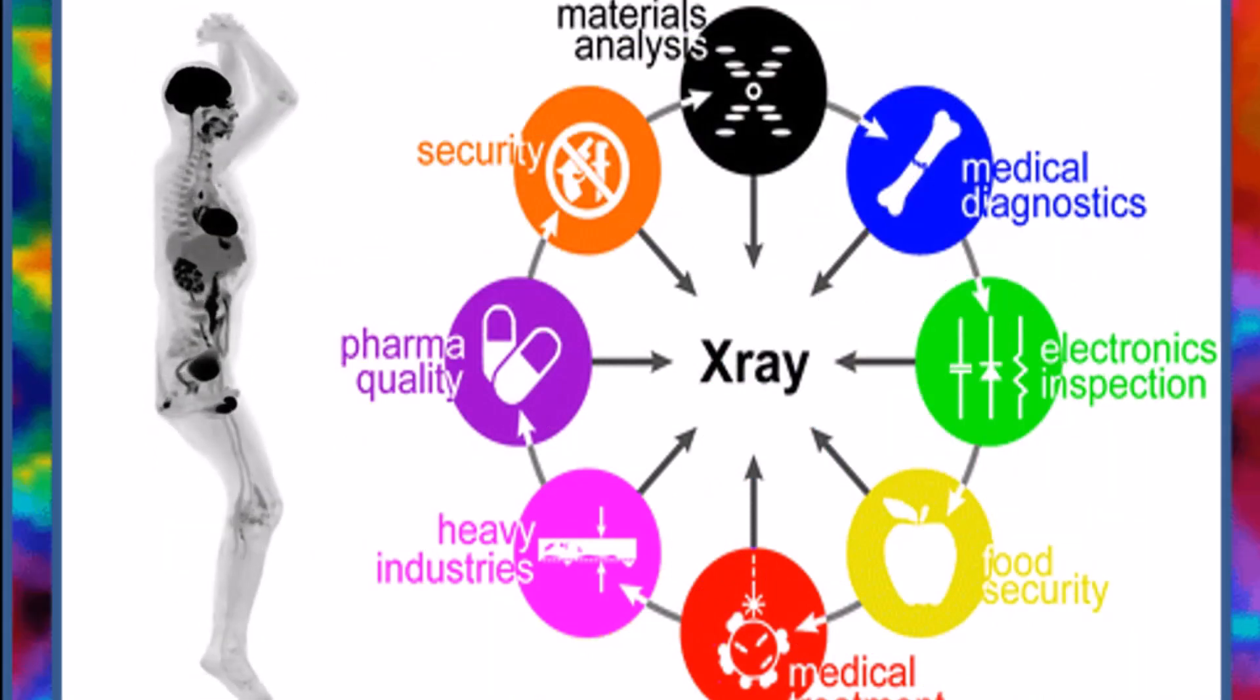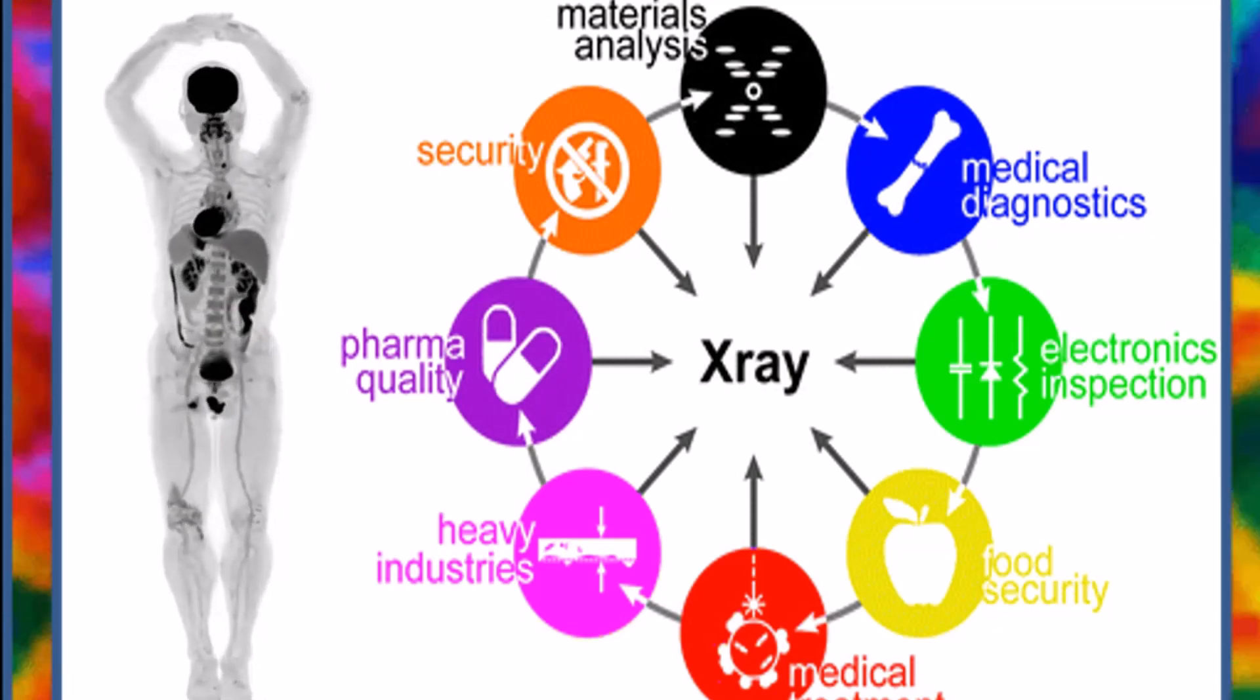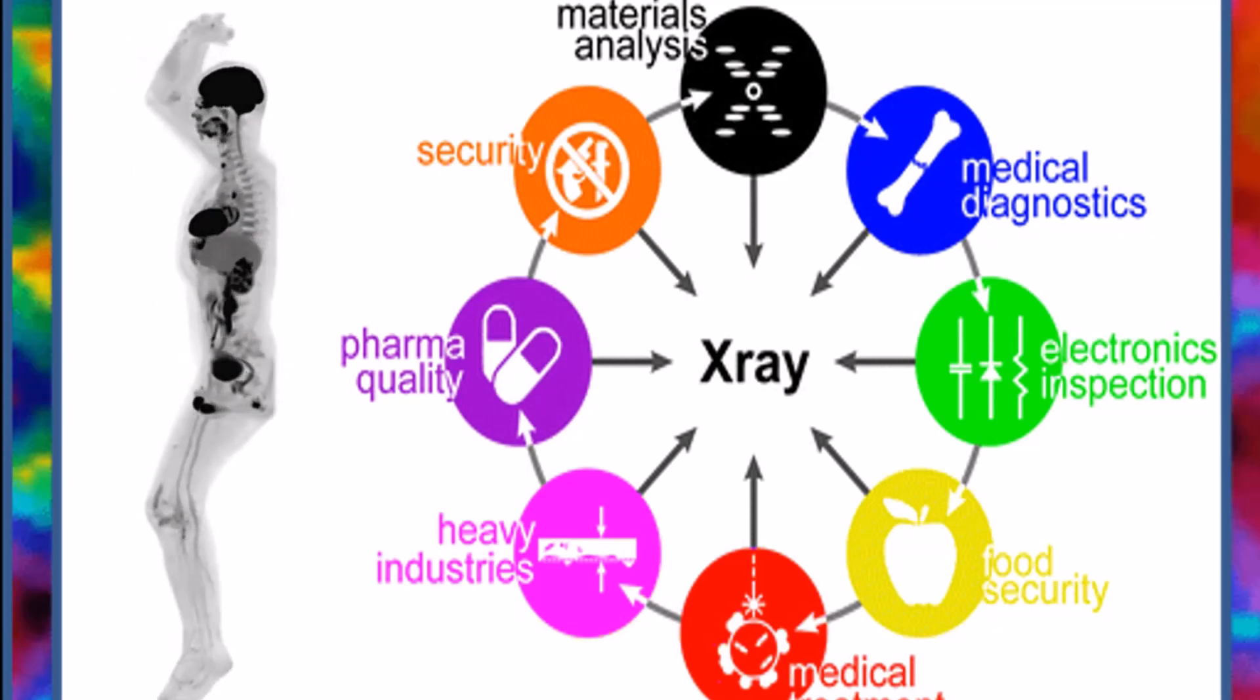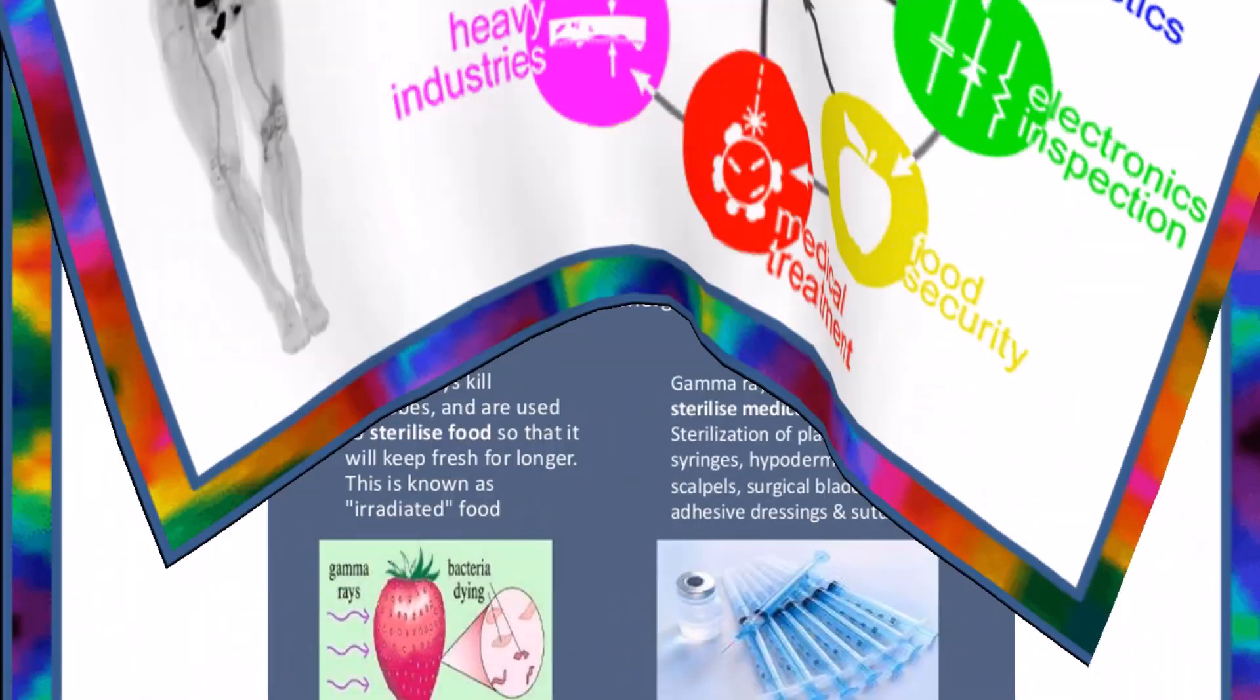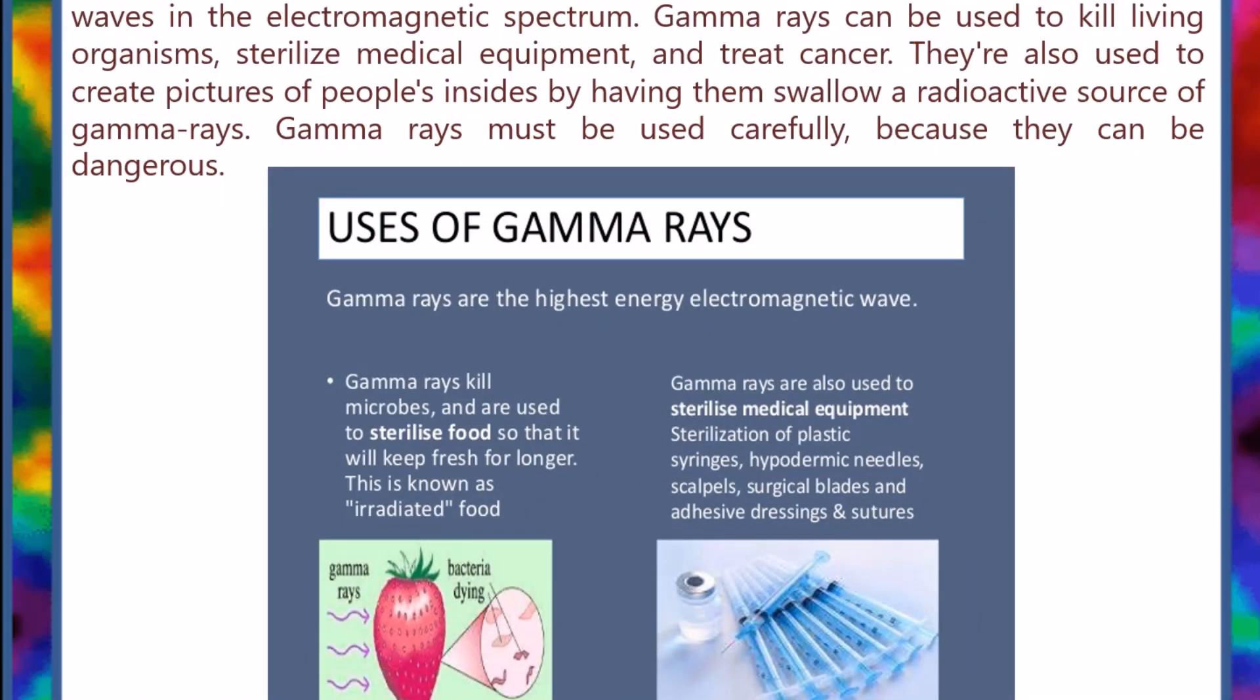X-rays are electromagnetic waves that can be used in aptly named X-ray machines to see inside your body and diagnose various diseases. They can also be used to kill cancer cells.